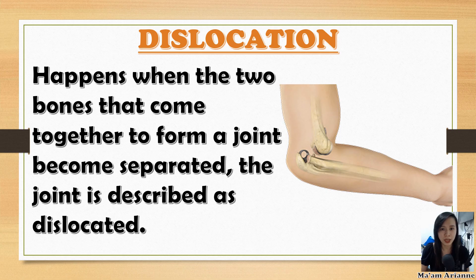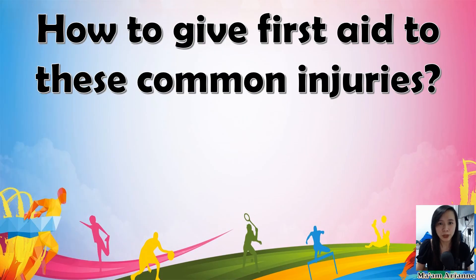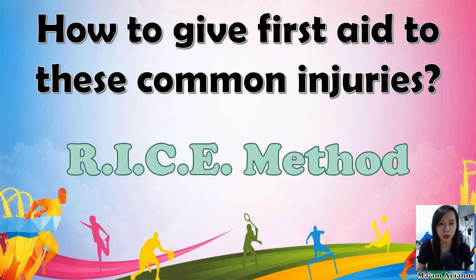Last is dislocation, which happens when two bones that come together to form a joint become separated — the joint is described as dislocated. How will we give first aid to these common injuries? If you've ever hurt your ankle or had another type of sprain or strain, chances are your doctor recommended rest, ice, compression, and elevation — or what we call the RISE method — as one of your first treatments. The RISE method is a simple self-care technique that helps reduce swelling, ease pain, and speed up healing. You can treat minor injuries with the RISE method at home if you have an achy knee, ankle, or wrist after playing sports.